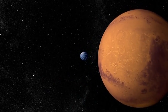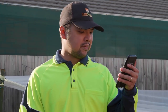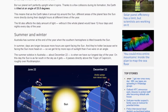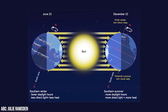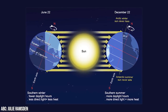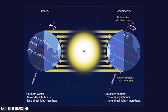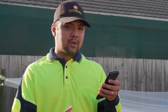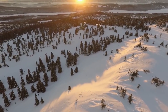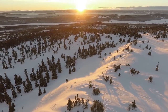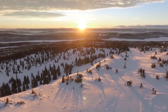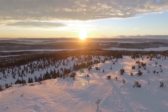The tilt also affects the daily amount of light. Without it, the whole planet would have 12-hour days and nights every day of the year. In summer, the days are longer because more hours are spent facing the sun, and they're hotter because we're facing the sun more head-on, so we get hit by more rays of sunlight than if we were on an angle. The tables turn six months later when the earth is halfway around its orbit of the sun. The northern hemisphere's solstice, the longest day, matches our winter solstice around June 22 when the sun is as far north as it goes, above the Tropic of Cancer.